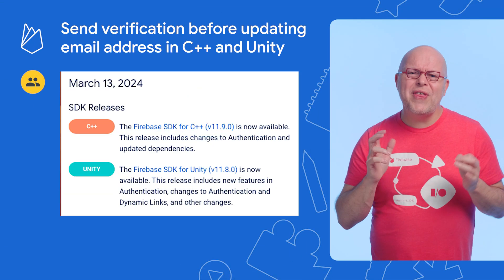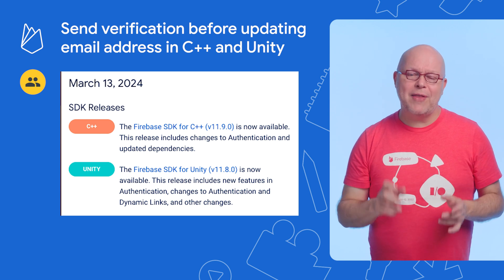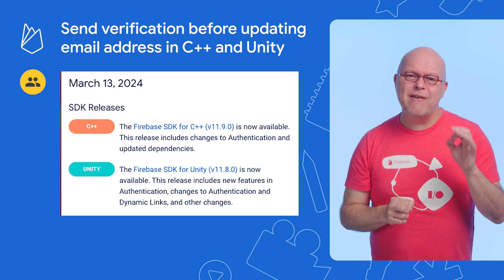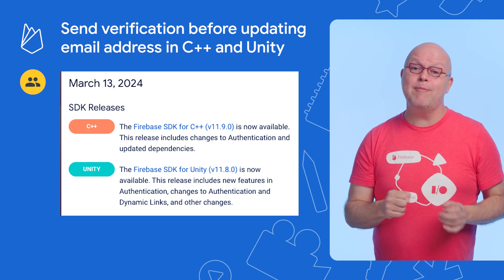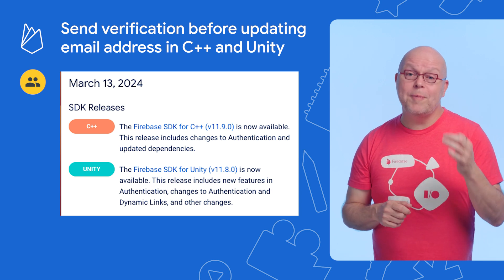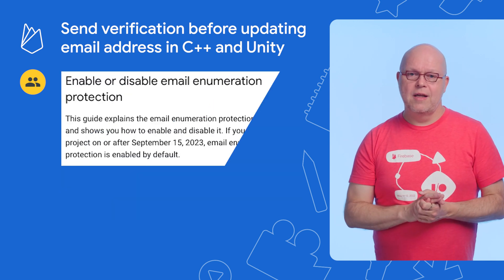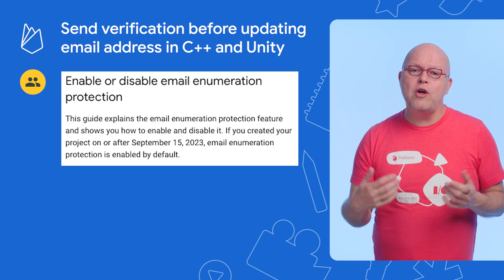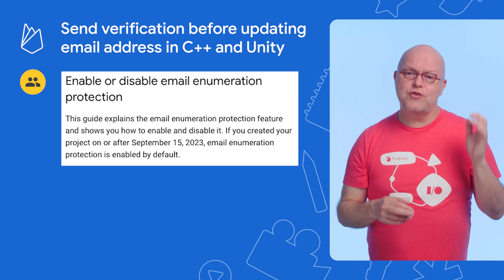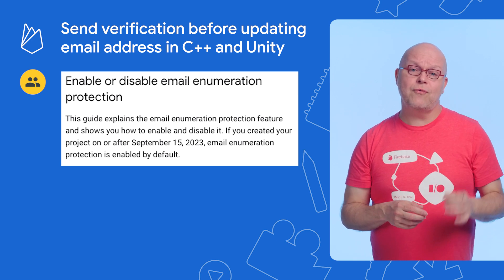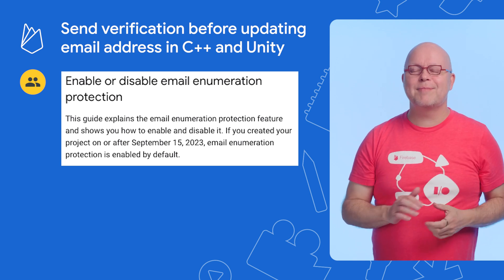Our authentication SDKs for C++ and Unity now have a method to send a verification message to the existing email address for an account before updating it to the new email address. This is all still part of our protection against email enumeration attacks, which is turned on by default for all projects created after September 15.